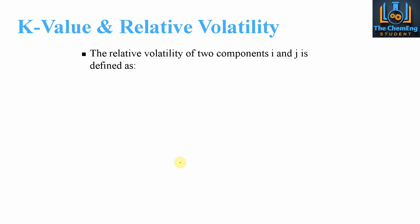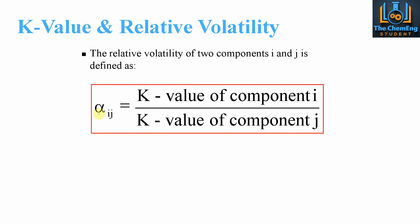The relative volatility of two components i and j can be defined as alpha_ij — the relative volatility of component i with respect to j. It is essentially the ratio of their K values: K_i on top and K_j on the bottom. If it were alpha_ji, then component j would be on top and component i on the bottom.